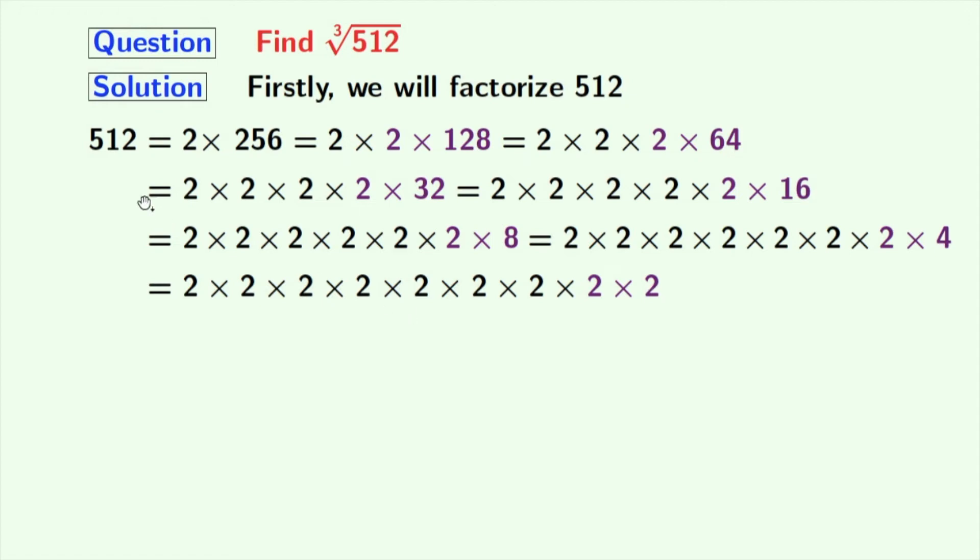So finally, 512 comes out as the product of 9 number of 2s. So we can write it as 2 to the power 9. So finally, we get 512 as 2 power 9.